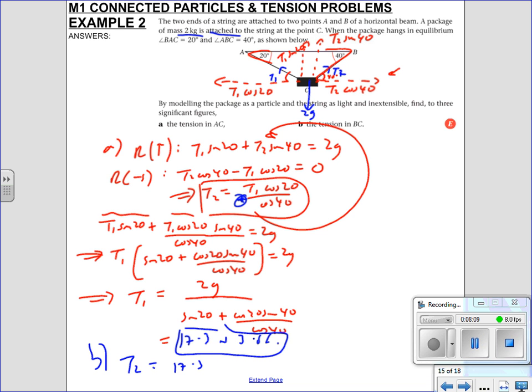Therefore we can find T2, which is your tension in BC, by substituting your answer for T1 back into here. So T2 is 17.3, but of course I'll use my answer in my calculator. Times cos 20 divided by cos 40, and you get 21.3 newtons to 3 sf. Wicked.